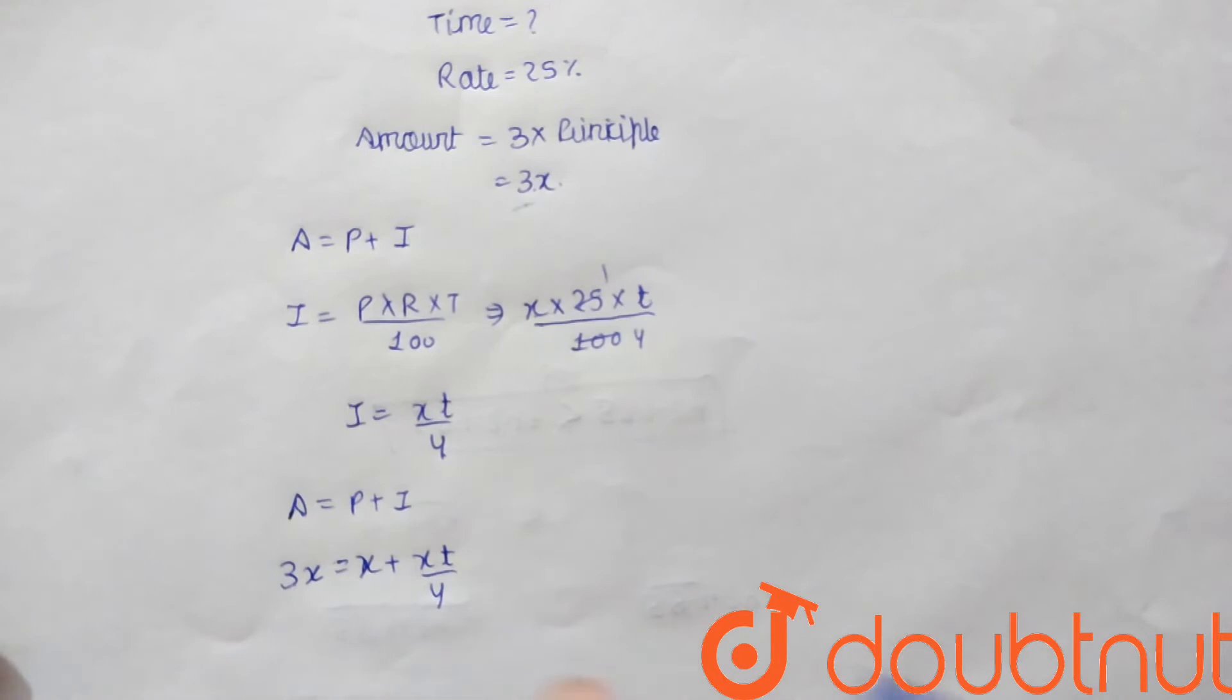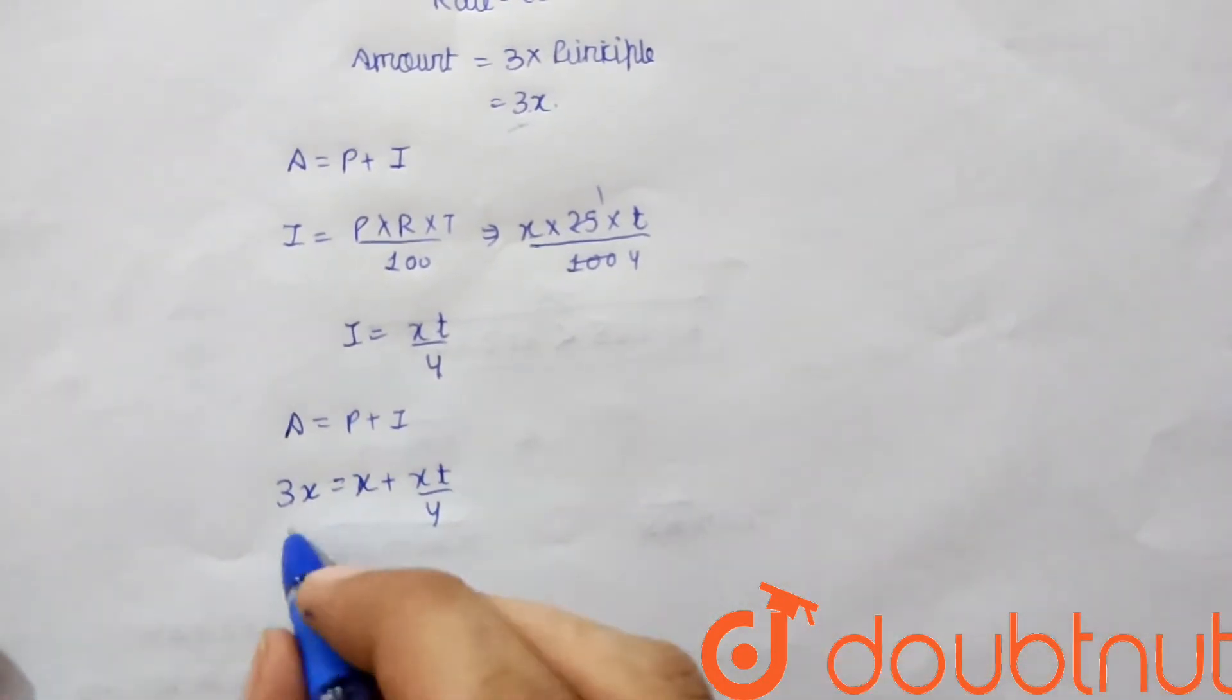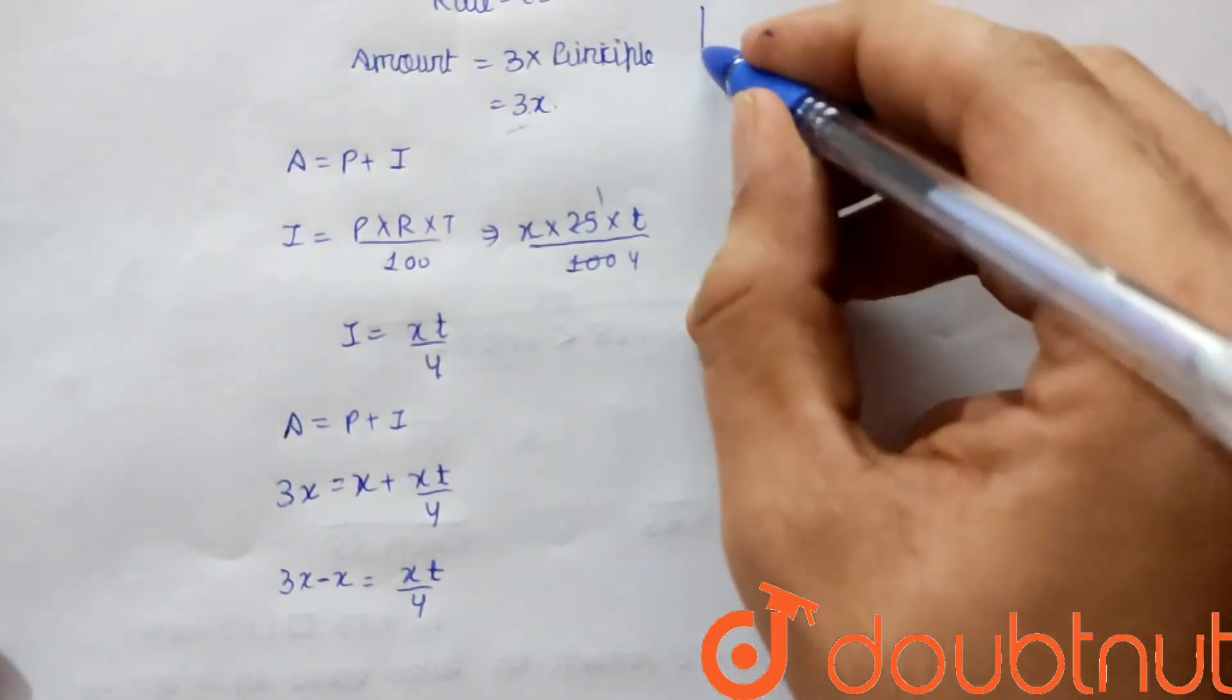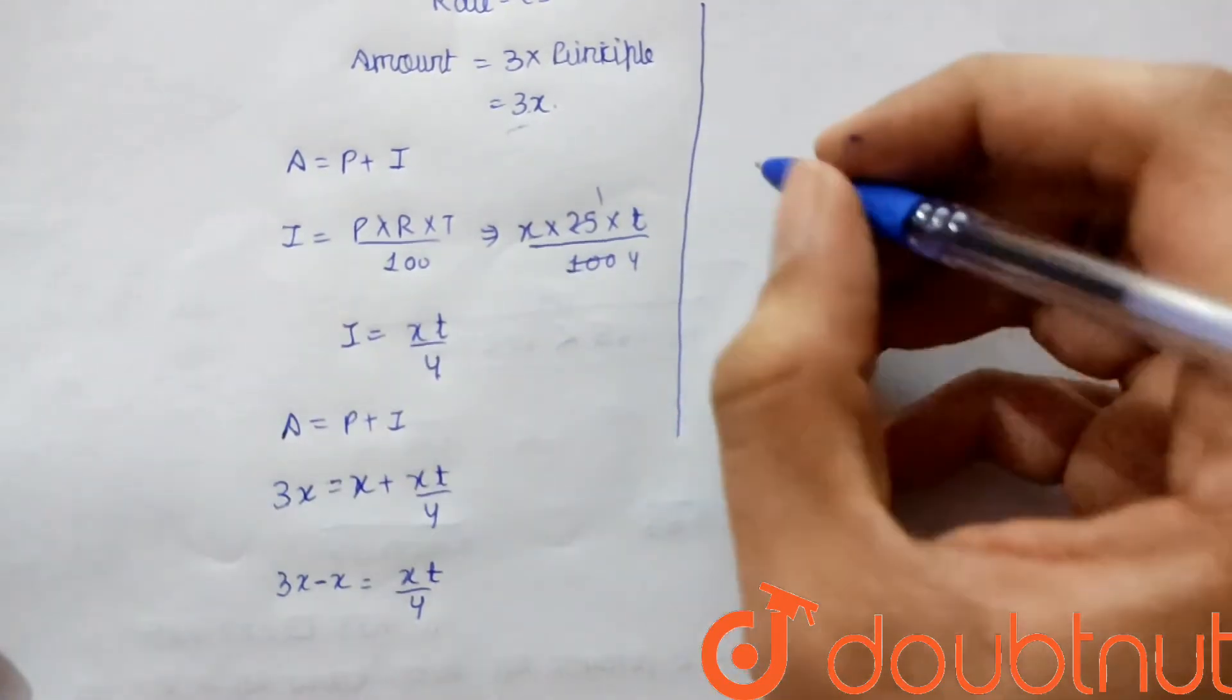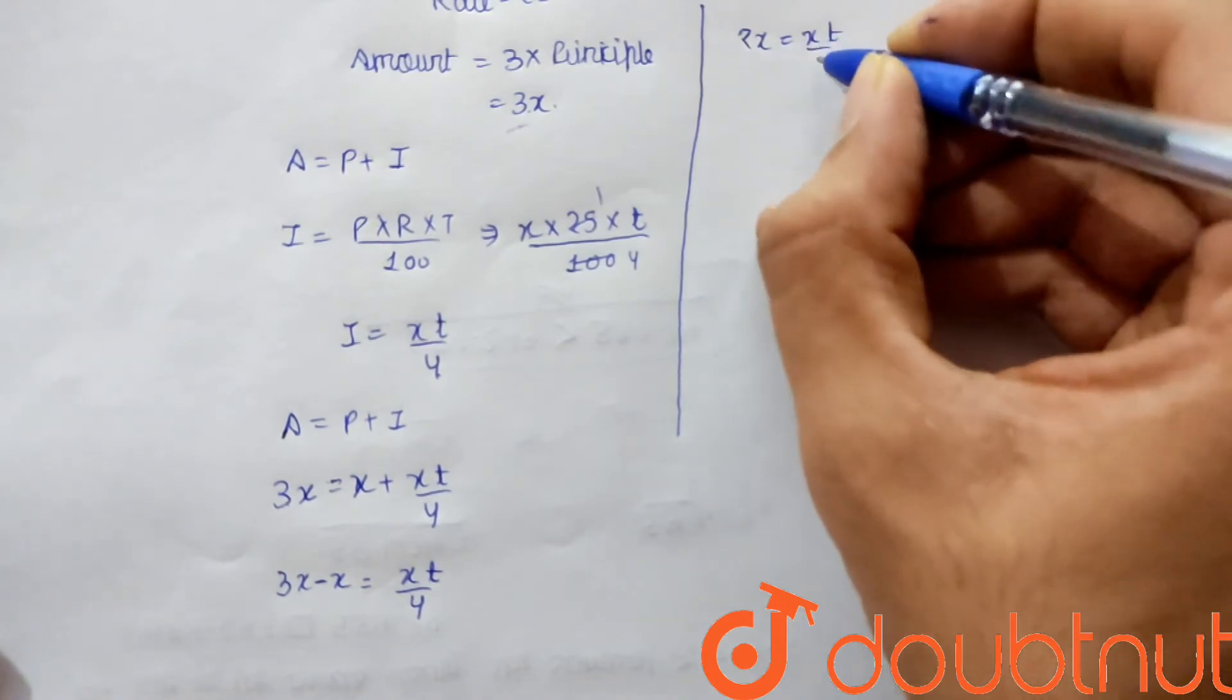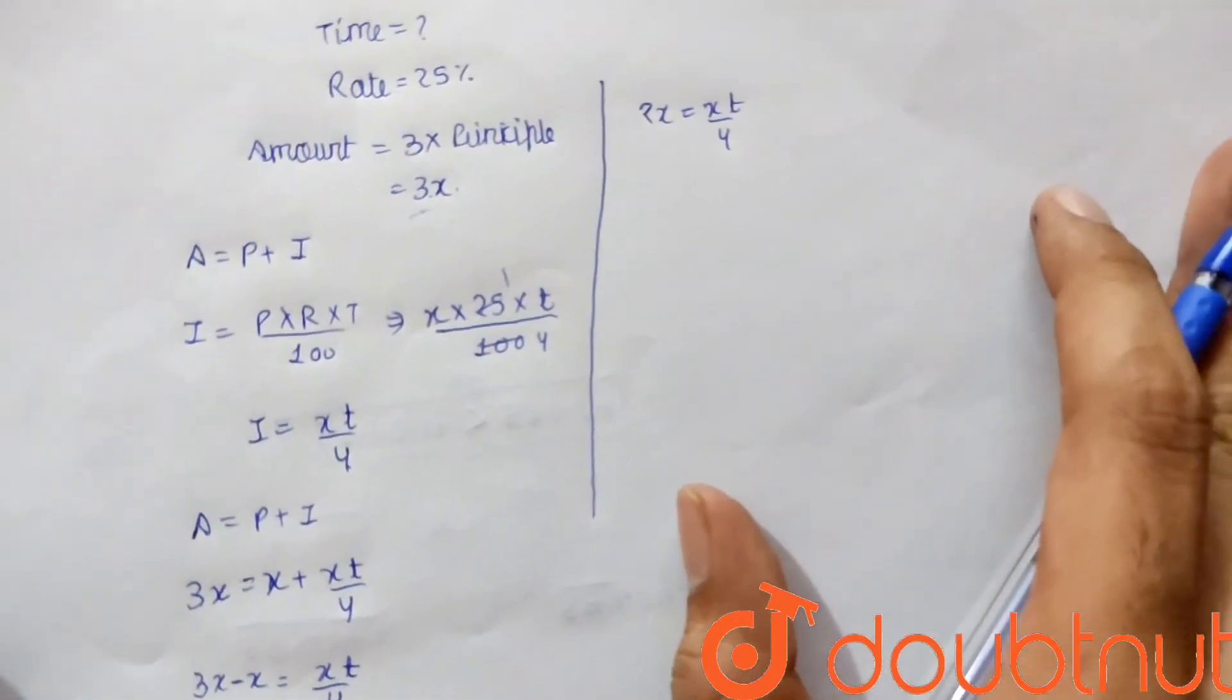So 3X = X + XT/4. Rearranging, 3X - X = XT/4. Therefore, 2X = XT/4.